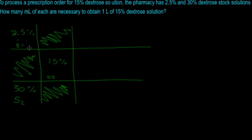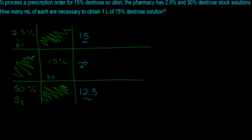Next, you're going to subtract diagonally. So 30% minus 15% gives you 15, and 15% minus 2.5% gives you 12.5 — negatives are never an option when dealing with these. Then you add both of those together: 15 plus 12.5 equals 27.5.